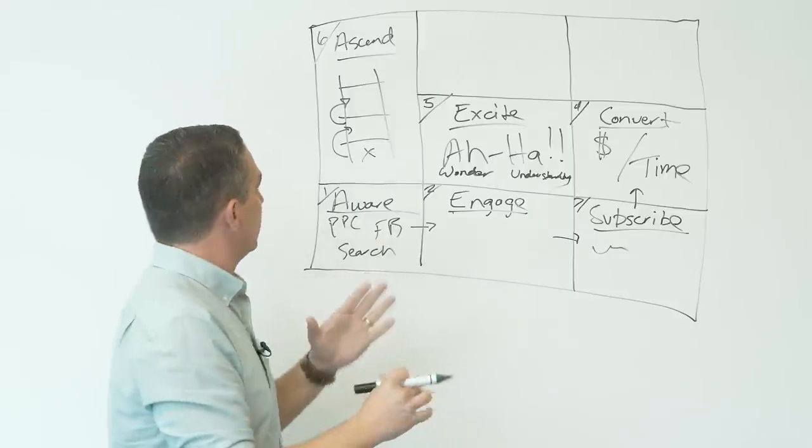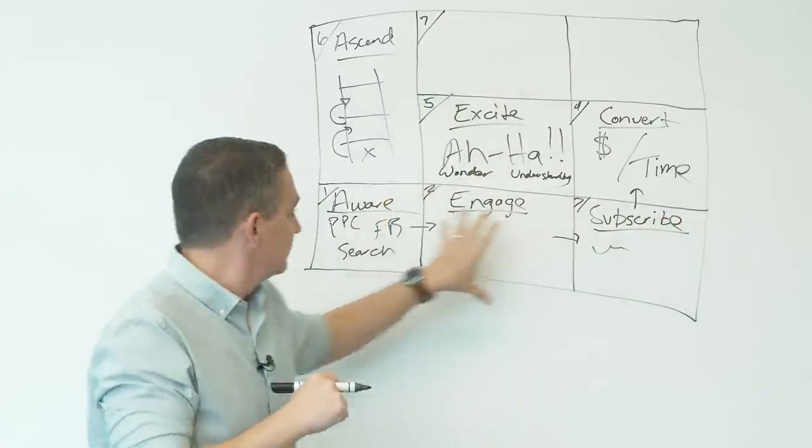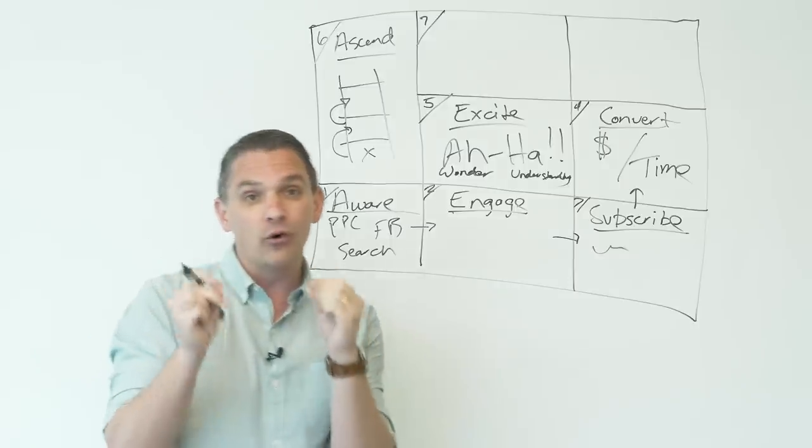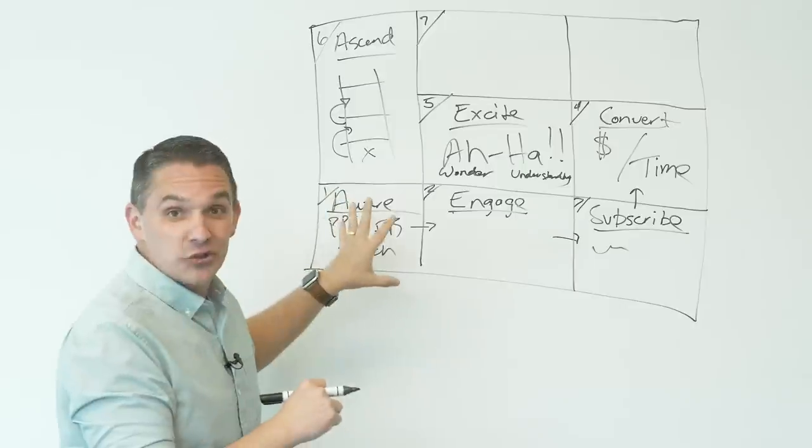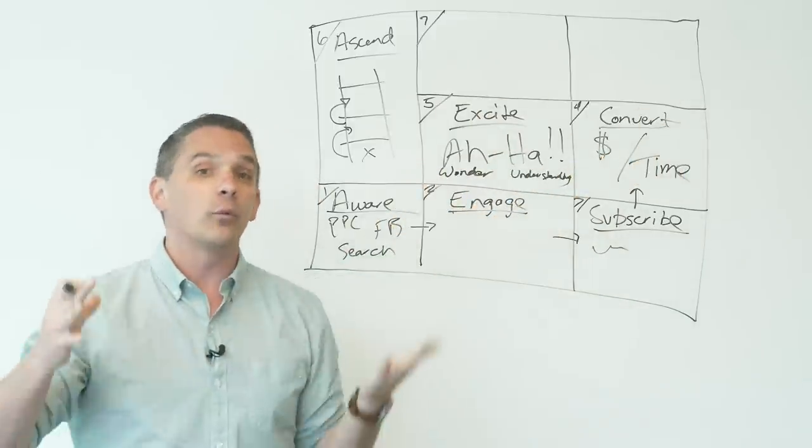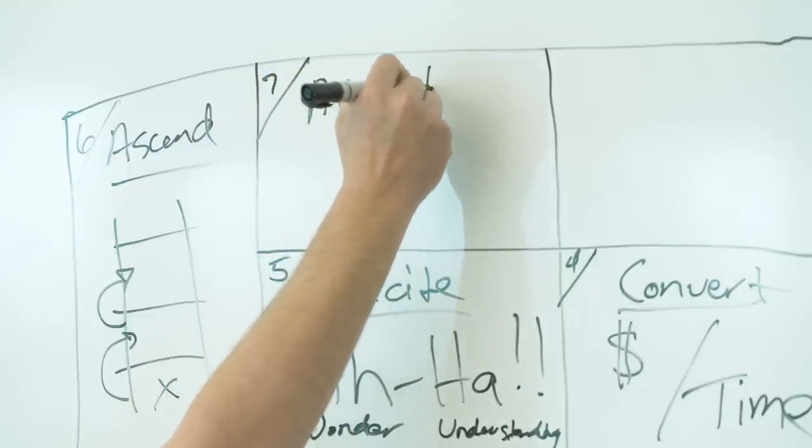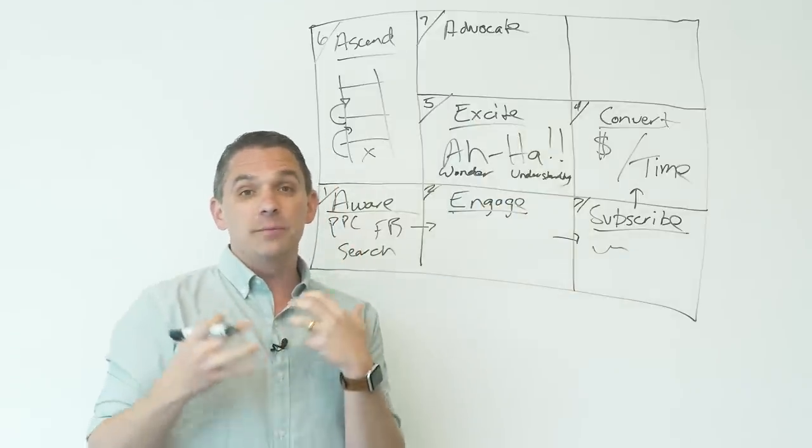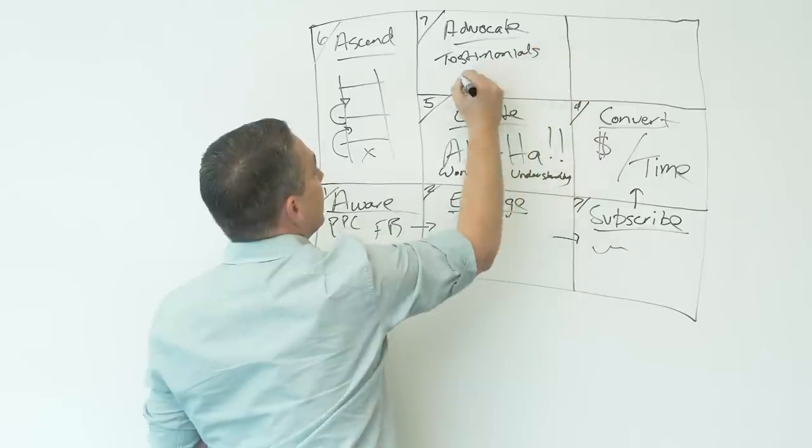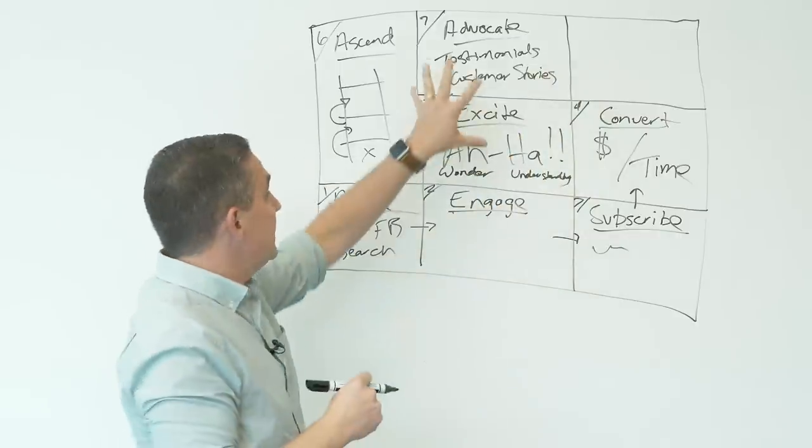Now when we get into stage seven, this is when we're kind of entering another phase. So we talked about this as being really that prospect phase from one to three. At the convert, it's the customer phase. Now what we're moving into is the advocate phase. Remember, the goal of the customer journey is to map the process from really stranger to friend to customer and then ultimately to raving fan. That's what we want. We want raving fans and you'll see why in just a little bit. So at stage seven, this is the advocate phase. This is when people are happy and they're beginning to be successful and they're leaving things like testimonials.